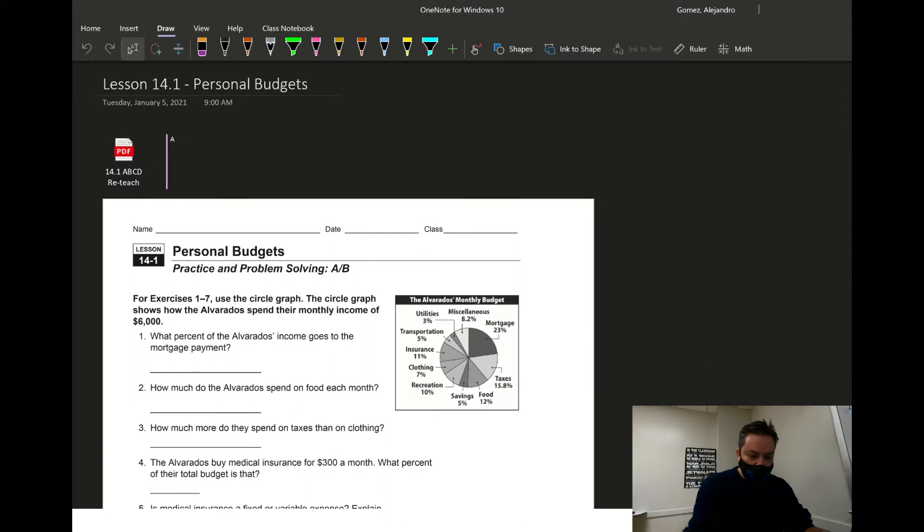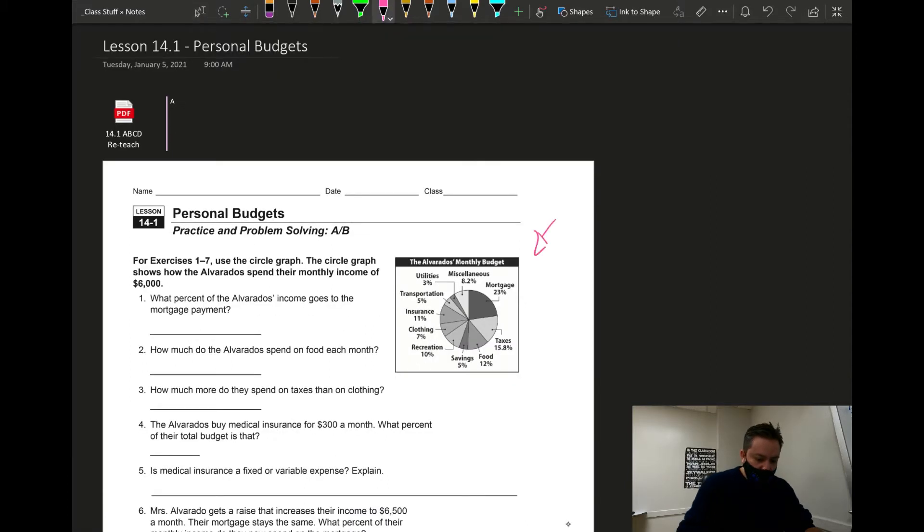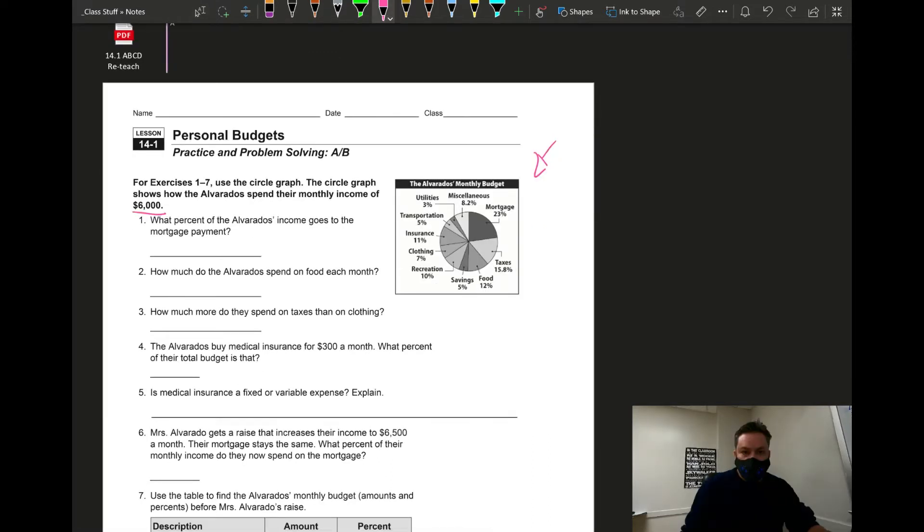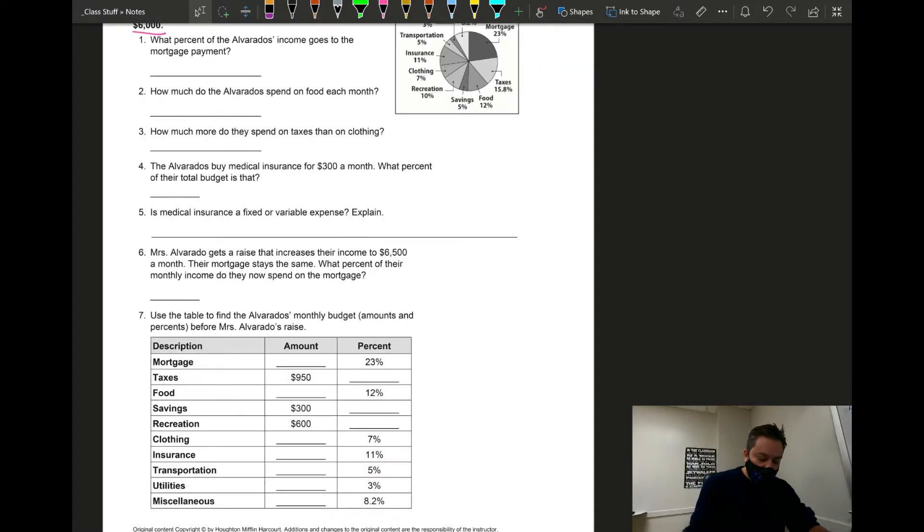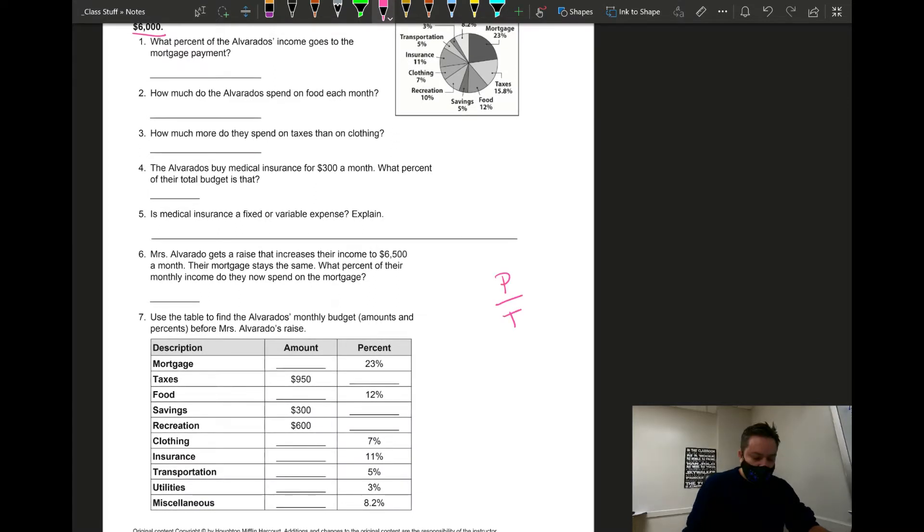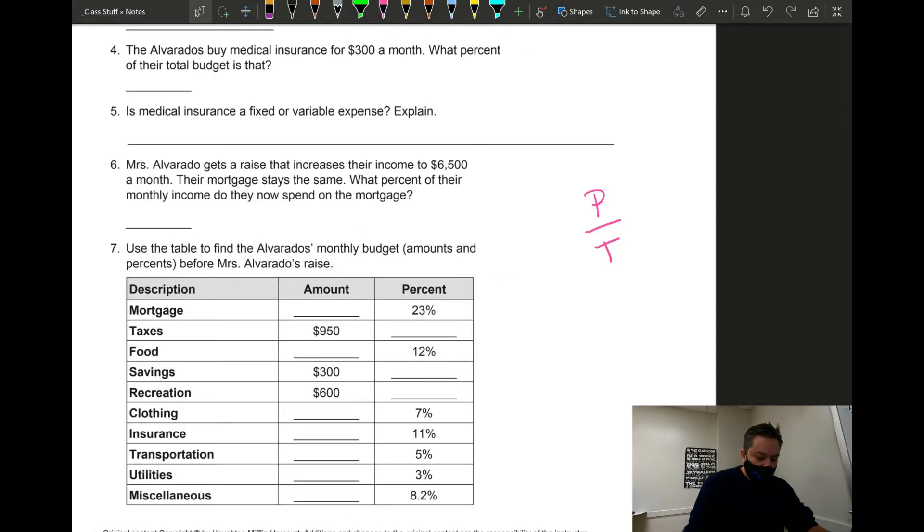Compared to the circle graph right here, we are based on the $6,000 income. That's going to be my total monthly income. For this we are going to do the part over total. That's to find the percent. If you are given the amount, if you're given the money, this is going to work for the money. For instance, on taxes we're given $950. What percent is that out of the $6,000?